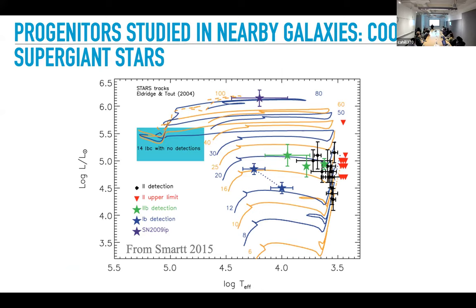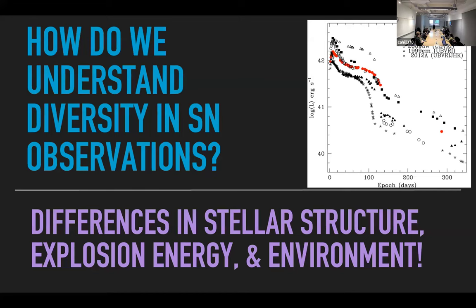We know that Type IIP and Type II supernovae in general come from explosions of very bright, very cool stars — red supergiants. Here's an HR diagram with stellar evolution tracks. These are stars where we saw an explosion, dug through HST archival data, found the star that died, and placed it on the diagram. I'll be talking mostly about Type II supernovae and Type IIb supernovae coming from red and yellow supergiant stars.